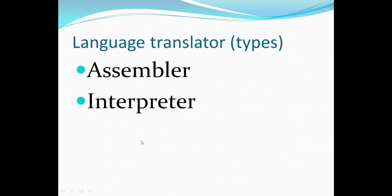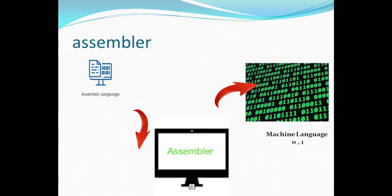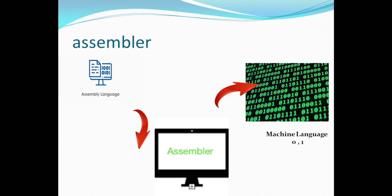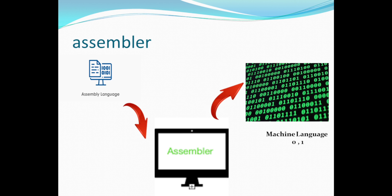Now in Tamil: There are three types of programming language translators — assembler, interpreter, and compiler. When we use assembler programming language and create code, it will convert to machine language. Assembler programming language is very difficult; it is a very difficult method.